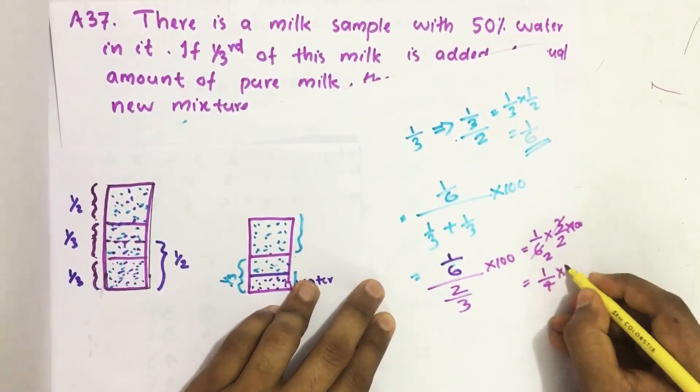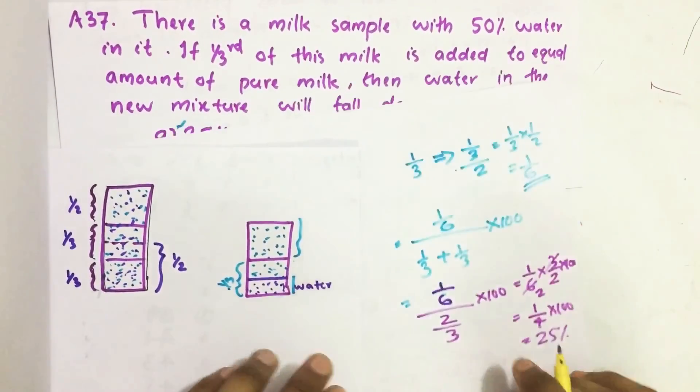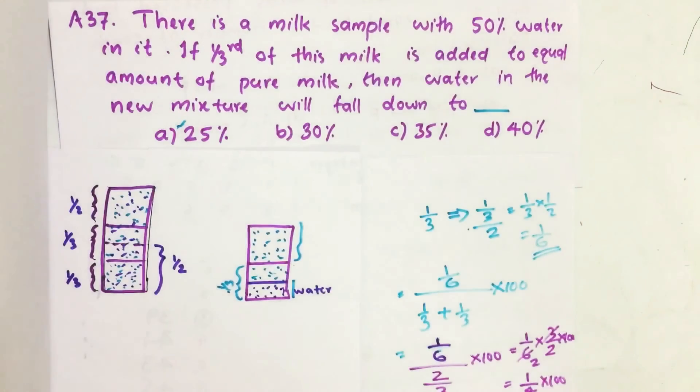Then one by four into 100. This is 25 percent. Our answer is option A, 25 percent.